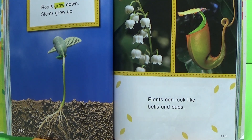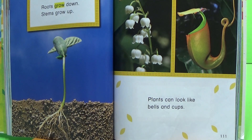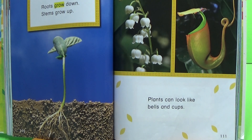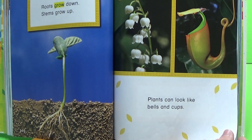Roots grow down, stems grow up. Plants can look like bells and cups.